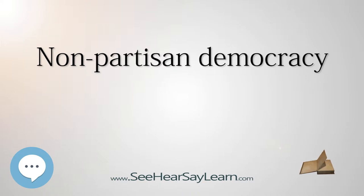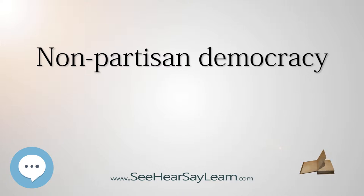In many nations, the head of state is non-partisan, even if the prime minister and parliament are chosen in partisan elections. The heads of state are expected to remain neutral with regards to partisan politics. There are two basic types of non-partisan governments: de facto and de jure. De facto non-partisan governments are ones where no laws prevent the formation of political parties, but no parties exist.